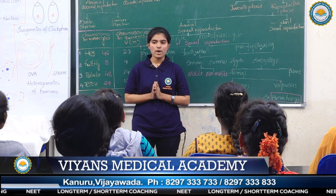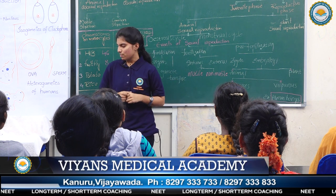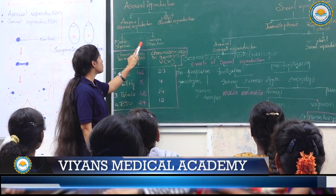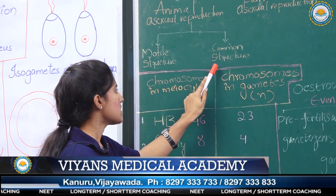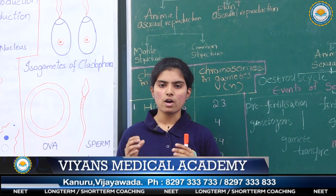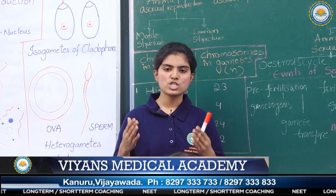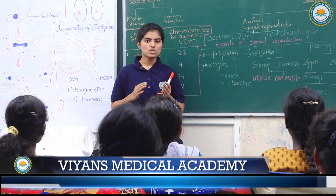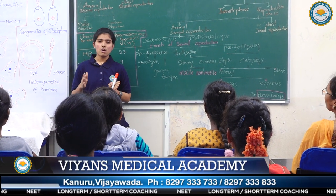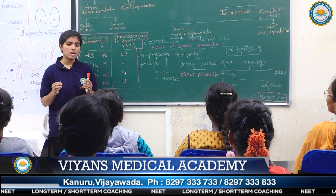Asexual reproduction is divided into two types: animal asexual reproduction and plant asexual reproduction. In animal asexual reproduction, there are motile structures and common structures. Motile structures: in higher organisms of kingdom fungi and algae, they have special motile structures and produce zoospores and conidia. Common structures: lower organisms of algae and fungi produce buds and budding.